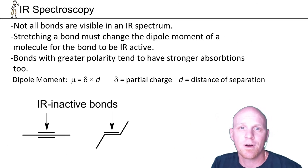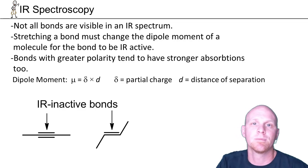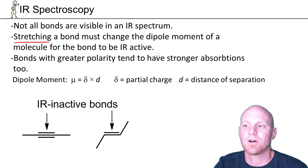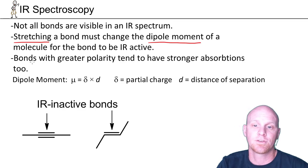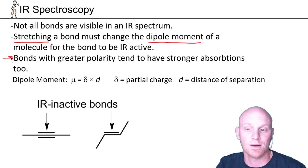Not all bonds are going to be visible in an IR spectrum. When you stretch a bond, it must change the overall dipole moment of that molecule. If it does, light will indeed be absorbed in causing a vibrational transition, that stretch. But if the dipole moment isn't changed, no light gets absorbed whatsoever. Bonds with greater polarity tend to have stronger absorptions as well.